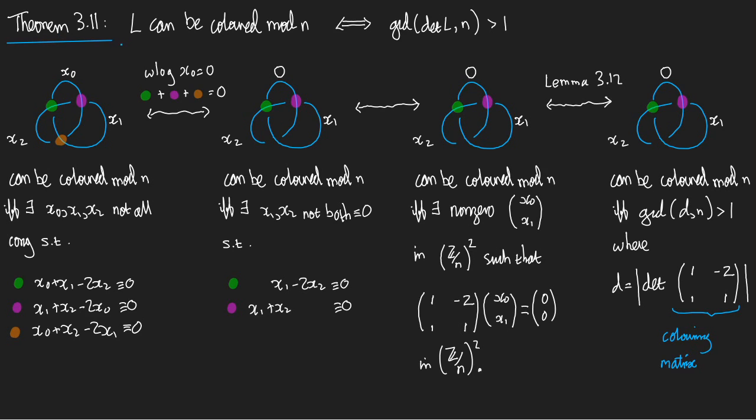So what does the theorem say? It says that a link L can be coloured mod n if and only if the greatest common divisor of the determinant of L and n is bigger than 1.